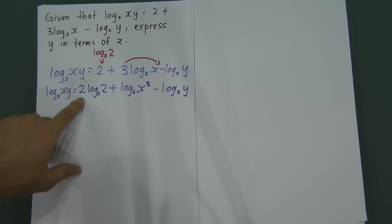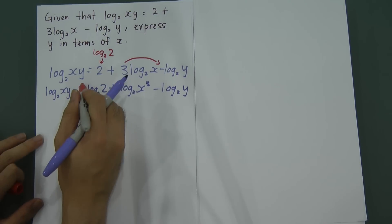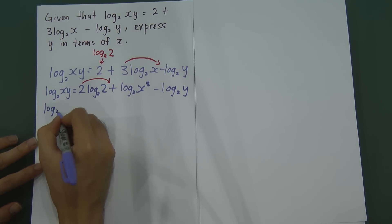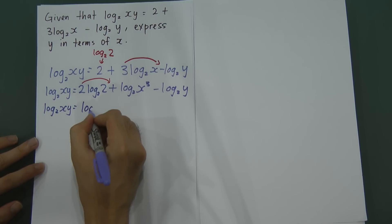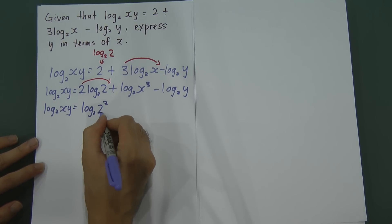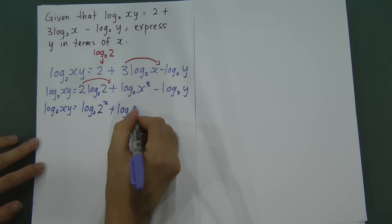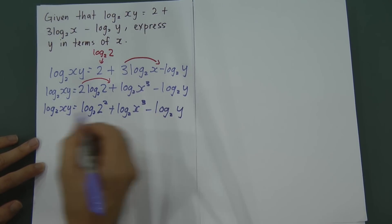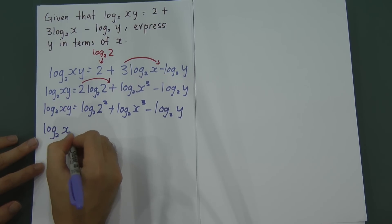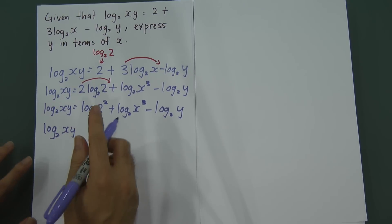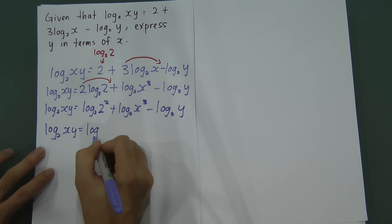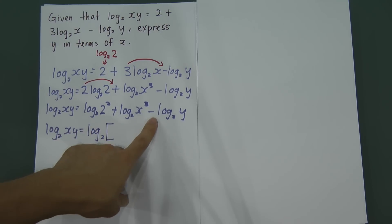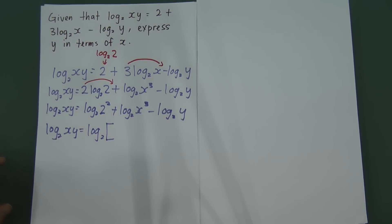Again, when you see the 2 in front of log₂2, move it back to become the power: log₂(2²). So one more step before we factorize: log₂(xy) = log₂(2²) + log₂(x³) − log₂y. Now all terms have log₂, so you can factorize out the log₂. Remember: plus means multiply, and minus means divide in the log world.